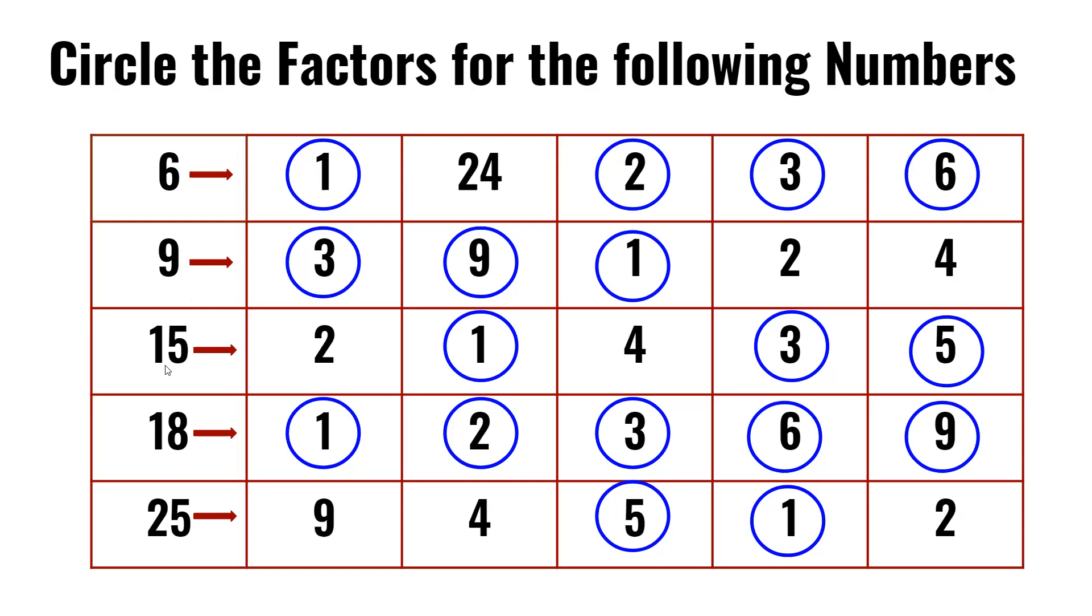In the third row, we have 15. We have 2, 1, 4, 3, and 5. We know 1 times 15 is 15, and 3 times 5 is 15 too. So 1, 3, and 5 are factors of 15.